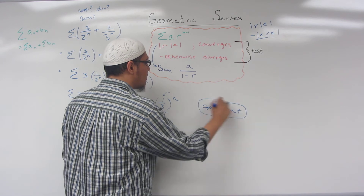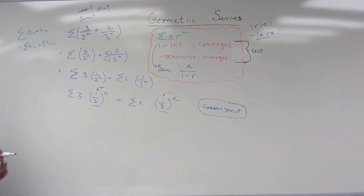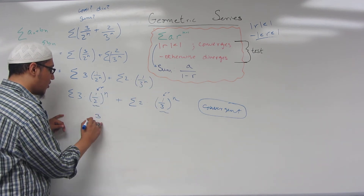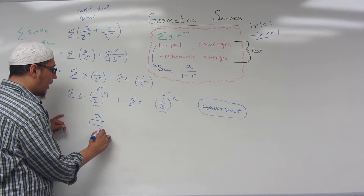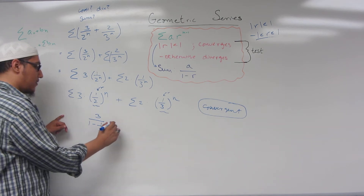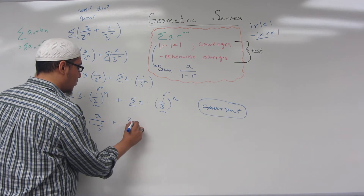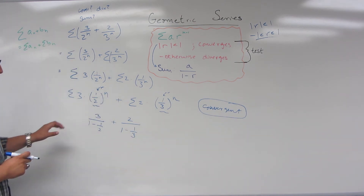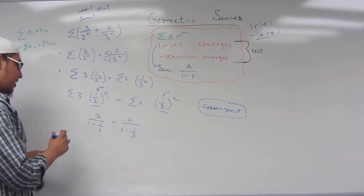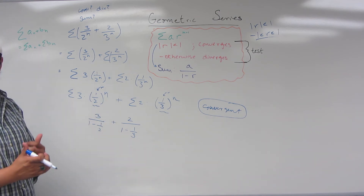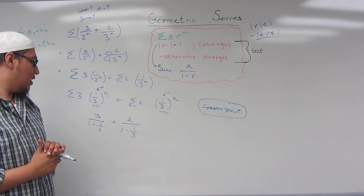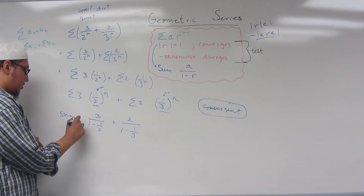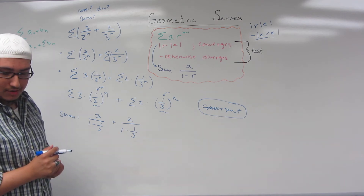Since this is convergent, we can find the sums using A over 1 minus R. In this case: 3 over 1 minus 1 half, plus 2 over 1 minus 1 third. You're more than welcome to simplify the arithmetic. This is the sum of the geometric series.